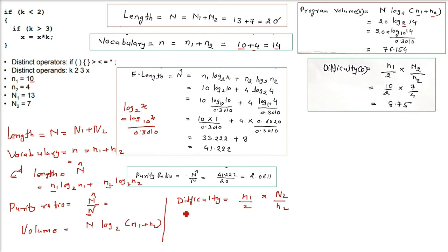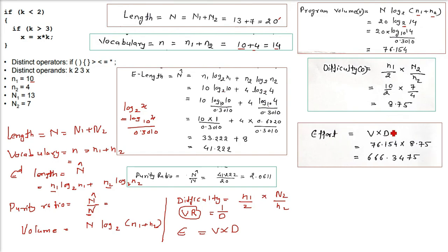Here is one more thing called volume ratio VL. Volume ratio is 1 divided by difficulty. Effort is simply volume times difficulty. 8.75 is the difficulty, volume we know is 76.154. The answer will be 666.3475.